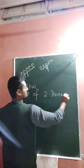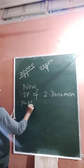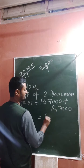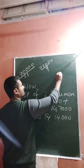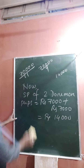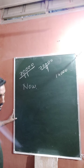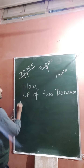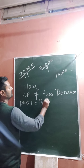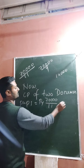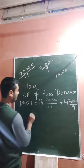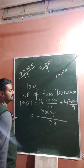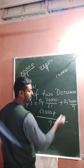SP of two Doraemon parts equals seven thousand plus seven thousand, which is fourteen thousand. Now CP of two Doraemon parts equals rupees seventy thousand divided by eleven plus rupees seventy thousand divided by nine. Taking the LCM of eleven and nine, which is ninety-nine: that gives sixty-three thousand divided by ninety-nine plus seventy-seven thousand divided by ninety-nine.